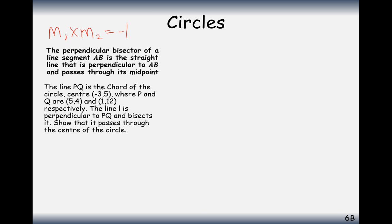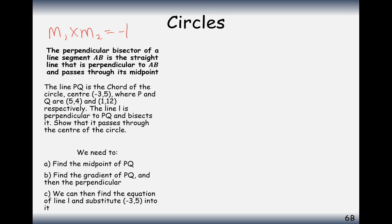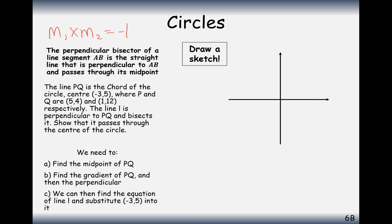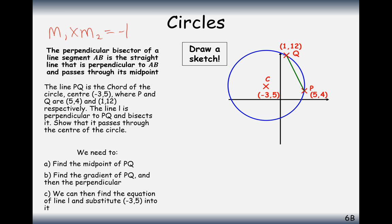A different question now. The line PQ is the chord of the circle with centre (minus 3, 5), where P and Q are (5, 4) and (1, 12) respectively. Line L is perpendicular to PQ and bisects it — show that it passes through the centre of the circle. Always draw a sketch. We need to find the midpoint of PQ, find the gradient from P to Q, do the perpendicular gradient, and then make sure (minus 3, 5) fits into the equation of the line. A chord connects one point on the circumference to another.